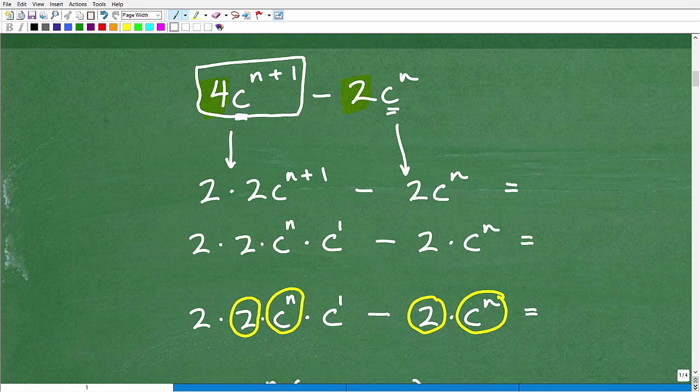So let's take a look at each of these terms. Let's take a look at the four times C to the N plus one power. And let's break this down into kind of its prime factors. So four obviously is two times two. And then here I have C to the N plus one. But this is the part right here that is the key to unlocking this problem. So this C to the N plus one, you can actually write this as C to the N times C to the first. The bases are the same. If the bases are the same, we add the exponents. So that's going to be C to the N plus one.